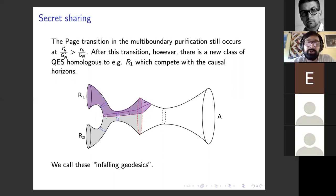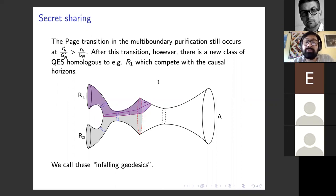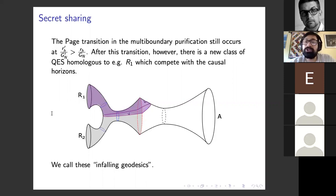The new class we're going to introduce are infalling geodesics. What they do is wrap this saddle point here, fall into the gluing surface, and then there's a refraction condition which sends them into the interior of the black hole. Shaded in purple is the entanglement wedge of R1 if this infalling geodesic were to be the dominant one in the quantum extremal surface formula. It actually includes a little piece of the interior. The point of this section is to understand just how far we can push that — whether a region R1 in this multi-boundary wormhole purification can reconstruct the entire interior, or half the interior.